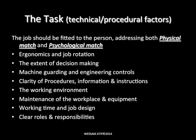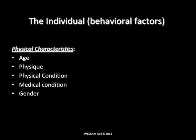Task factors — sometimes called technical, procedural, or job factors — relate to fitting the job to the person, addressing both physical and psychological match. Consider things like ergonomics, job rotation, the extent of decision-making the worker has, machine guarding, engineering controls in place, clarity of procedures and work instructions, the work environment, maintenance issues, working time, job design, and clear roles and responsibilities.